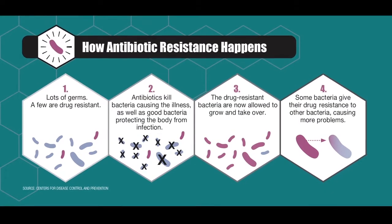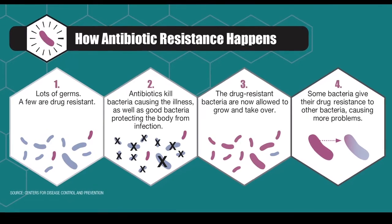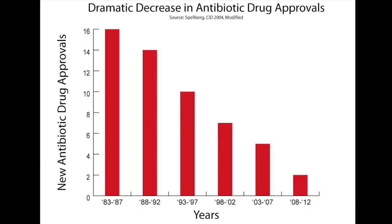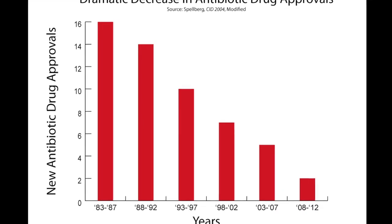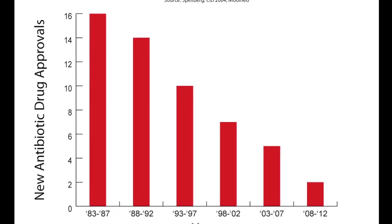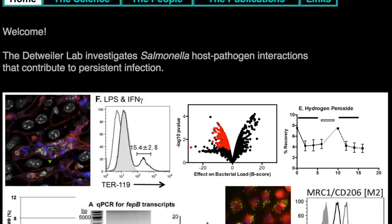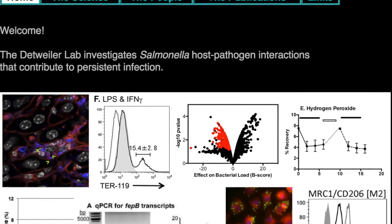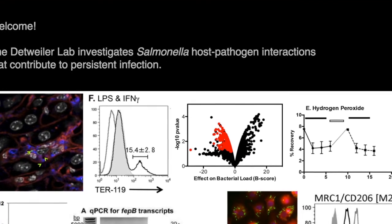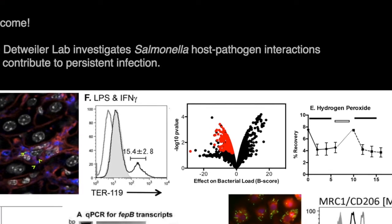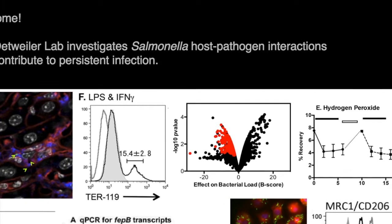Antibiotic resistance occurs naturally — all bacteria develop resistance over time. Drug development cannot keep pace with this resistance, and current methods are identifying fewer than one new antibiotic per year. Students in MCDB-1171 work in collaboration with the Detweiler Lab on an ongoing project to identify novel antibiotics that are effective against salmonella.